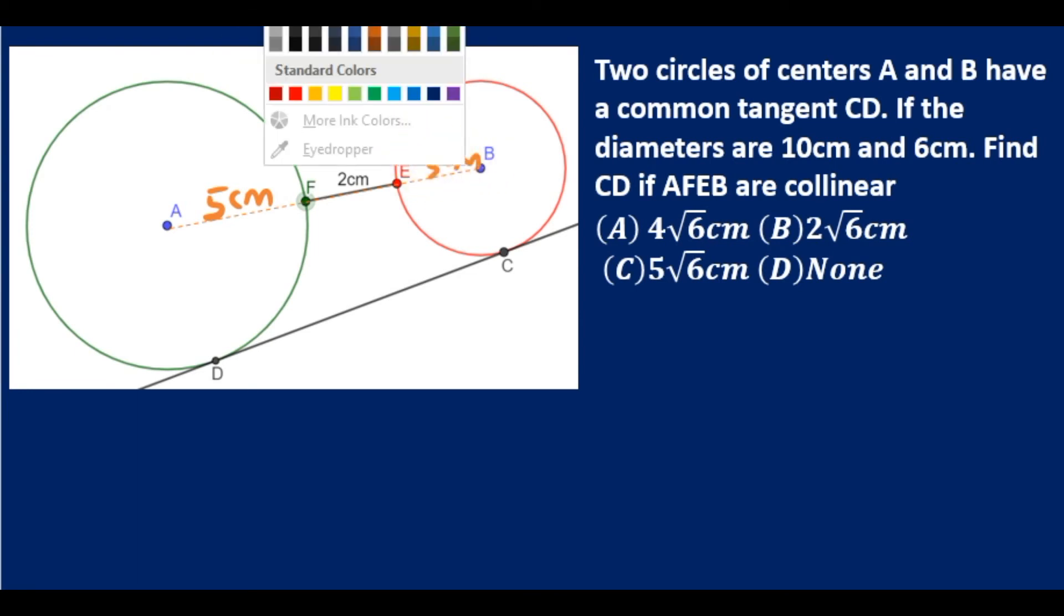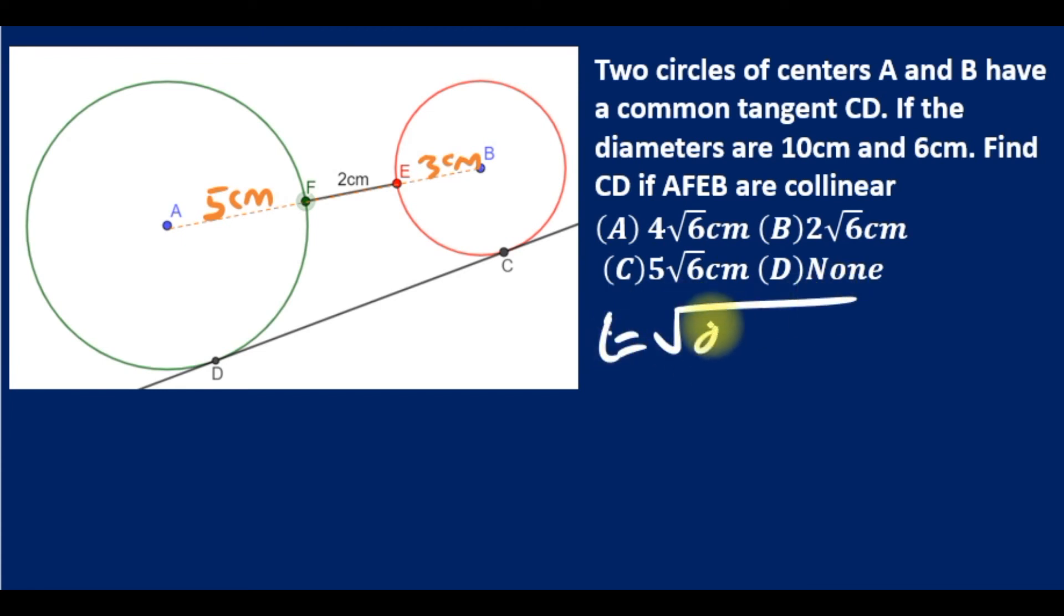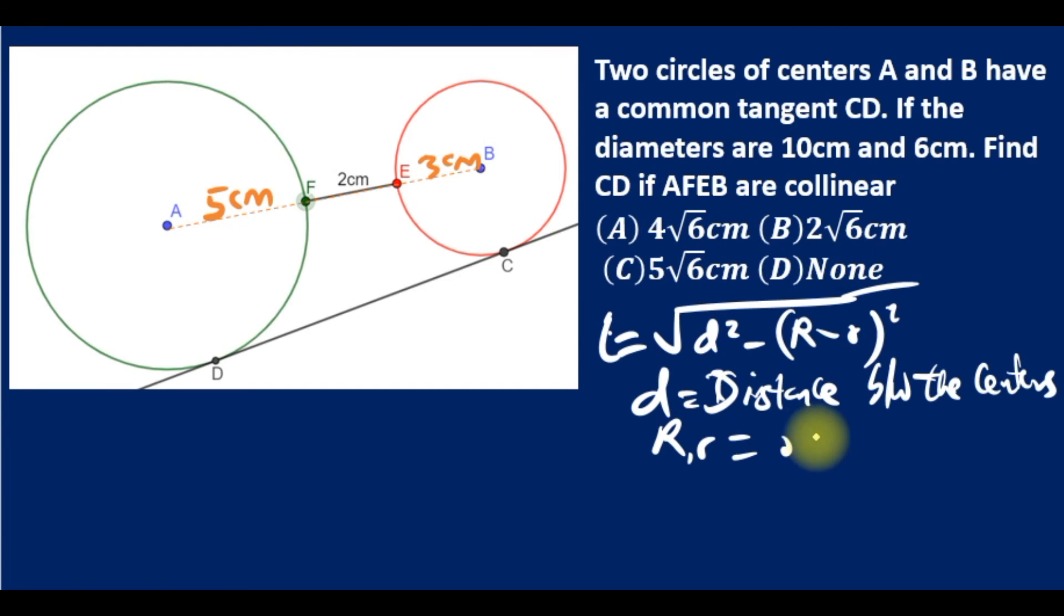Using our formula, the length of common external tangent is square root of d squared minus (R minus r) squared. Remember, d is the distance between the centers, and R and r are the radii. Substituting the values, l equals square root of (d is 10) squared, and (5 minus 3 is 2) squared.